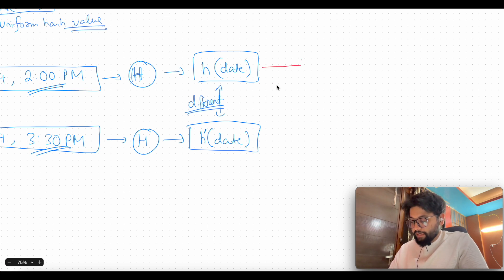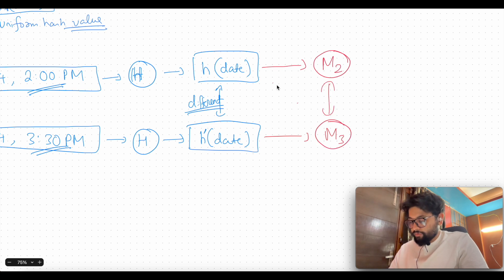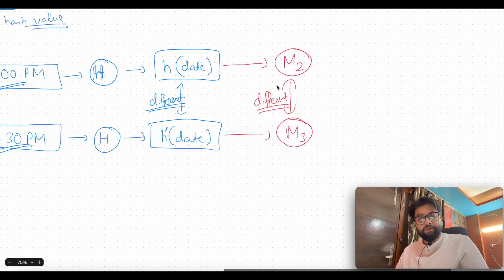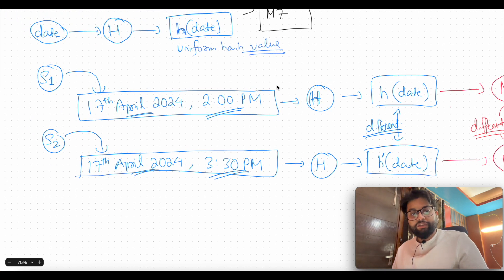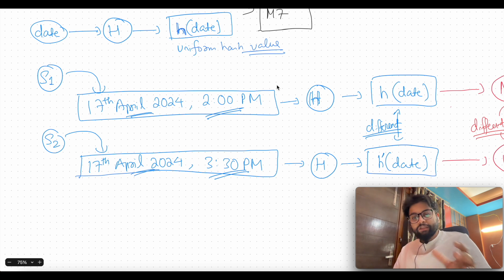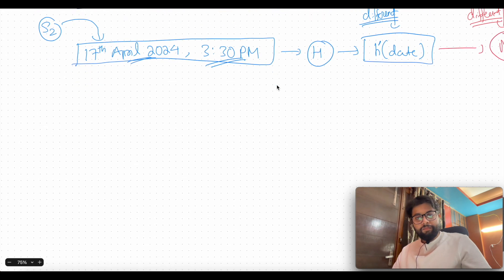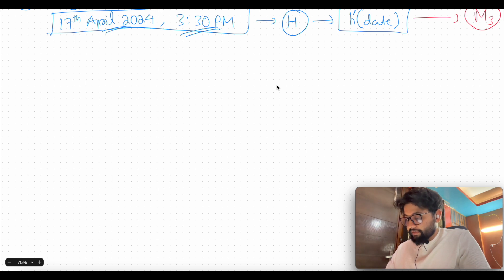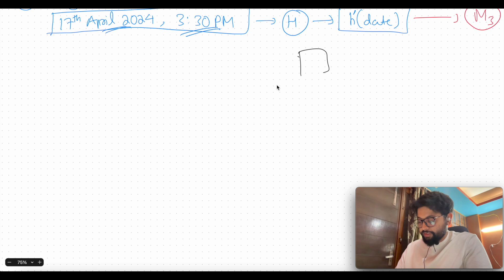Because the two hash values are different, the requests are directed to different machines. For instance, the first hash value might go to machine M2 and the second to machine M3. So even students registering on the same date are no longer directed to the same machine, because of the hash function introduced in the middle — allowing students to be distributed across different machines.